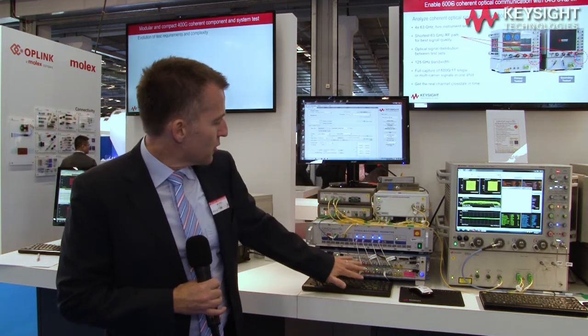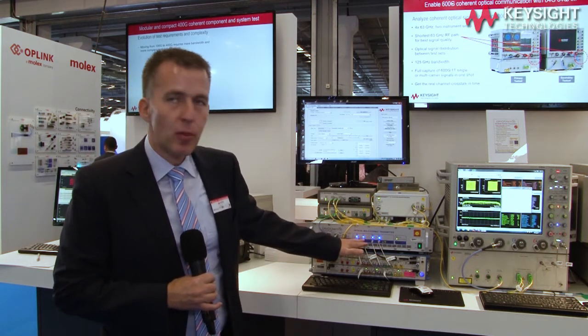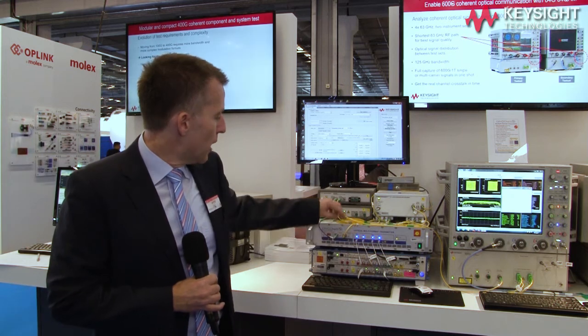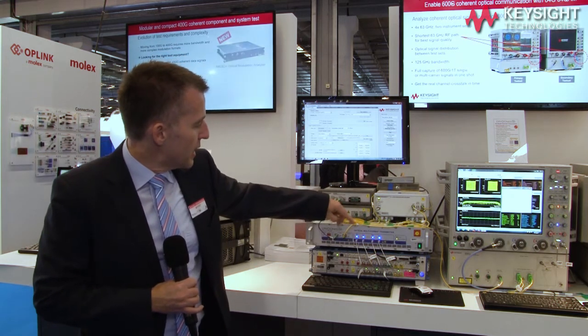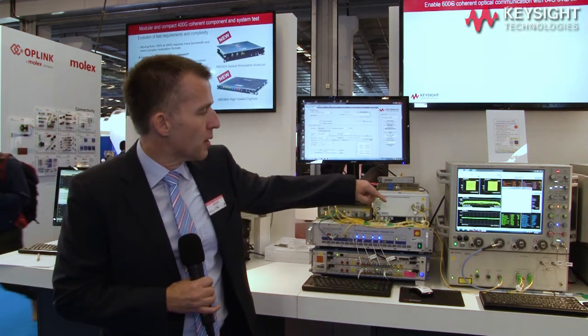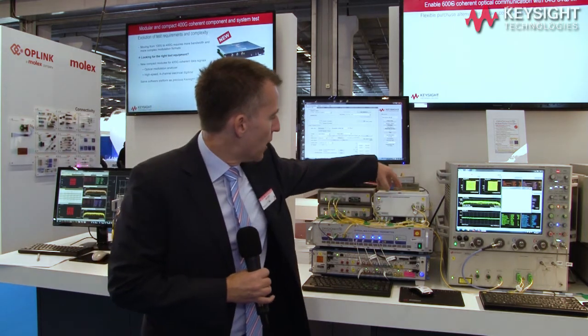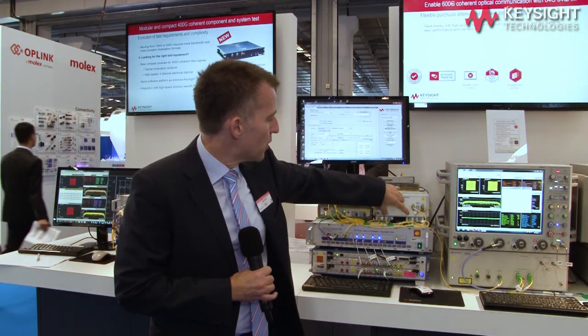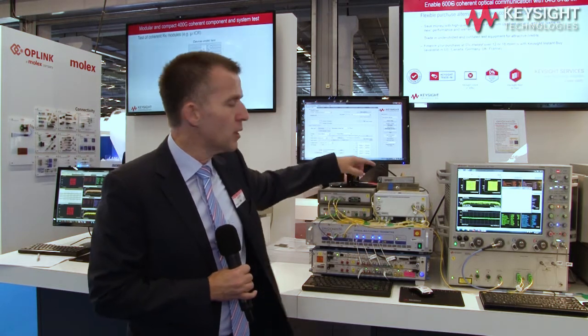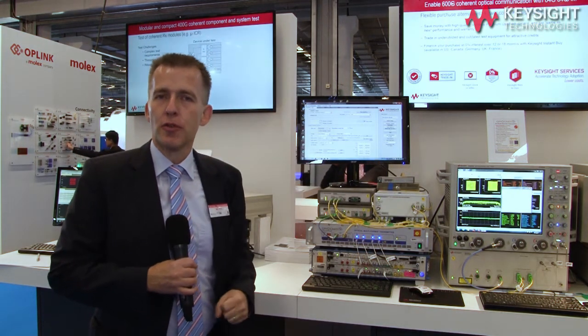So the electrical signal enters the optical multi-format transmitter and the modulated light leaves that output here and enters an amplifier, a set of couplers and a filter to do some signal conditioning to the signal, and finally we can analyze it on our optical modulation analyzer site.